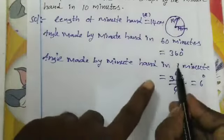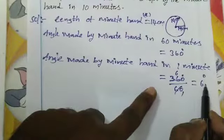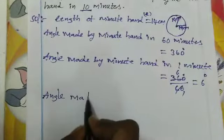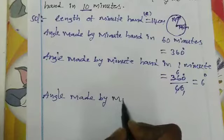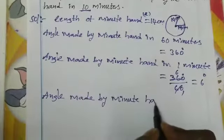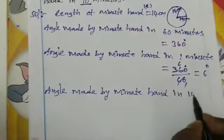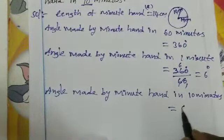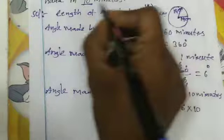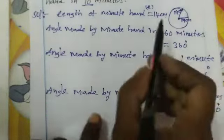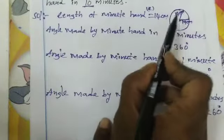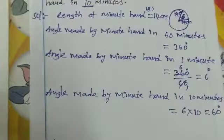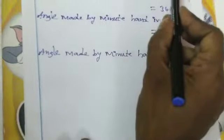The angle made by the minute hand in 1 minute equals 6 degrees. Now, given 10 minutes, the angle made by the minute hand in 10 minutes equals 10 × 6 = 60 degrees.